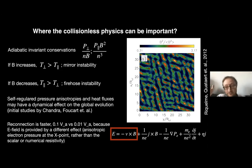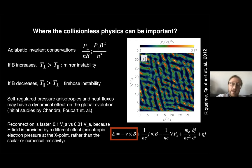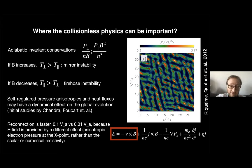The meaningful invariants are the perpendicular pressure divided by density and B, and the parallel invariant, which involves parallel pressure, B squared, and density. The first one is easy to understand: magnetic moments of particles must be conserved. If you average over the distribution function, you get conservation of this quantity. So if you have a patch of plasma and locally increase the B field, it drives perpendicular temperature up, parallel temperature down, giving a strongly anisotropic pressure tensor where perpendicular temperature becomes larger.